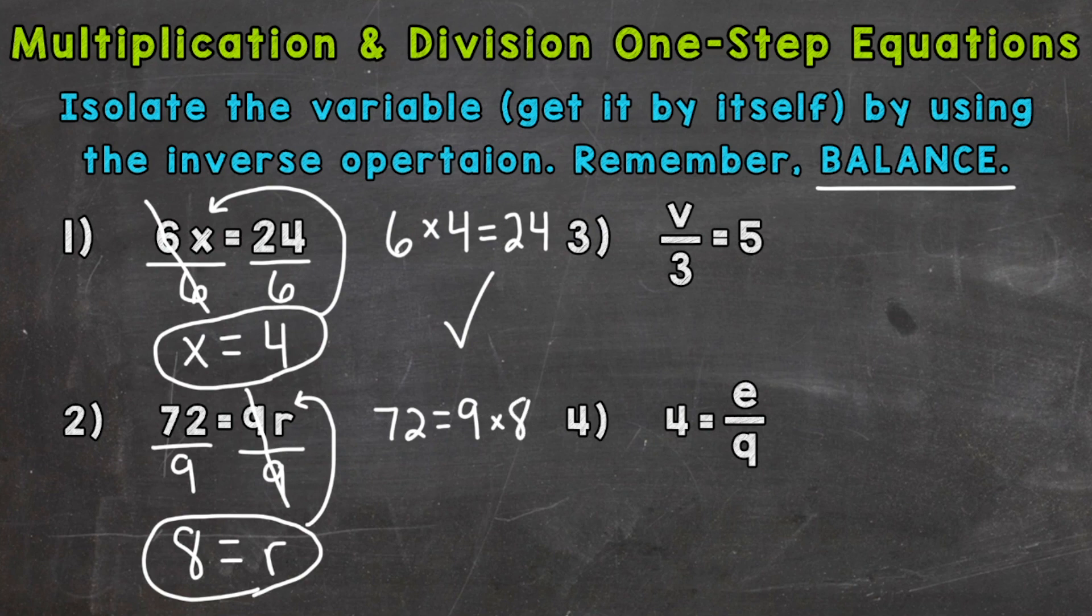You can think of these equations like balancing a scale. Each side has to be exactly equal. So the left, we have 72. And on the right, we have 9 times 8, which is also 72. So these two sides are equal.